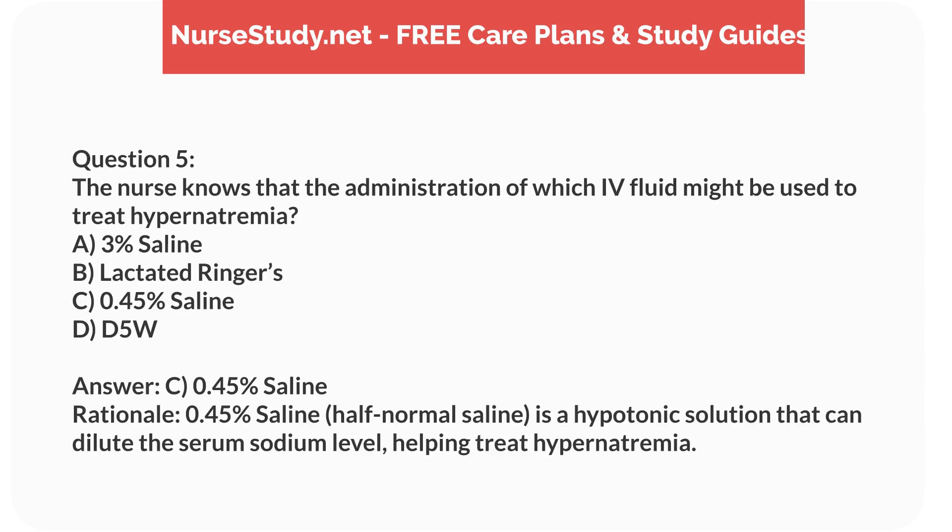Answer: C. 0.45% saline. Rationale: 0.45% saline (half-normal saline) is a hypotonic solution that can dilute the serum sodium level, helping treat hypernatremia.